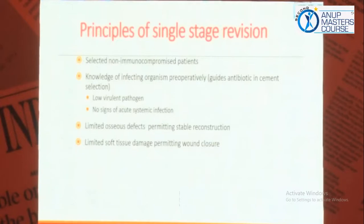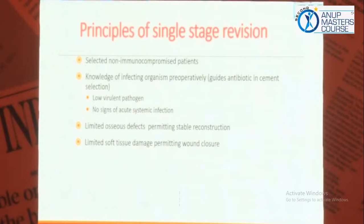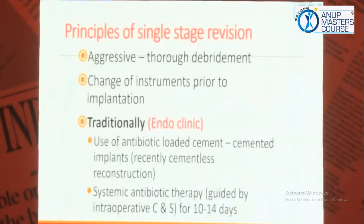Who are the candidates for single stage? Obviously non-immunocompromised patients. Both in case of DAIR and single stage, the organism should be known. Generally we send for culture and sensitivity, but it comes back negative and then we don't bother. Ideally it should go for an extended culture for 14 days - that is the cardinal rule. It should be a low virulent pathogen, there should be no signs of systemic involvement, limited osseous defect, and soft tissue permitting wound closure.